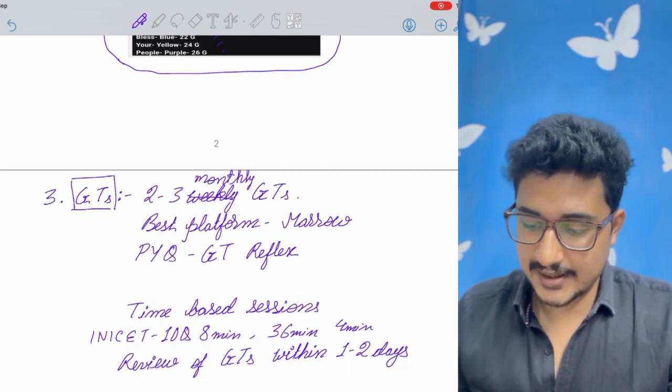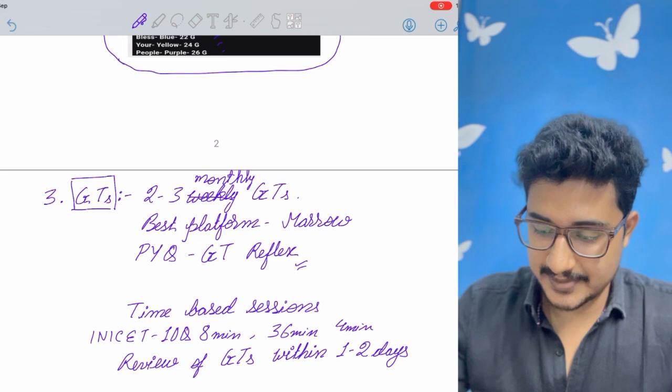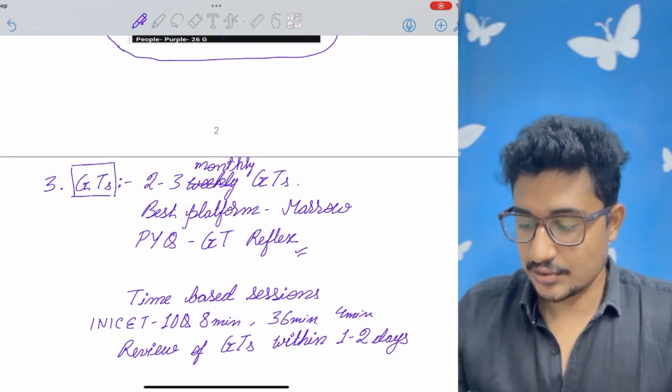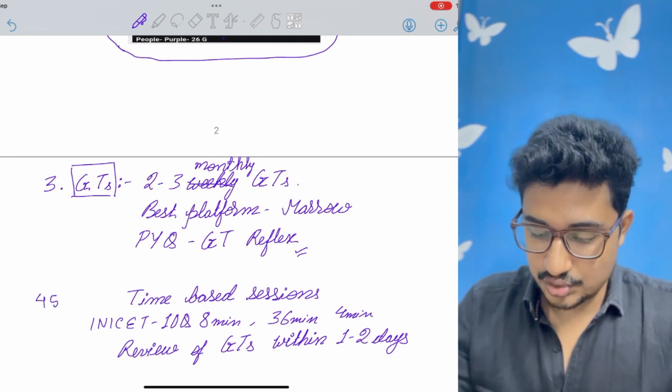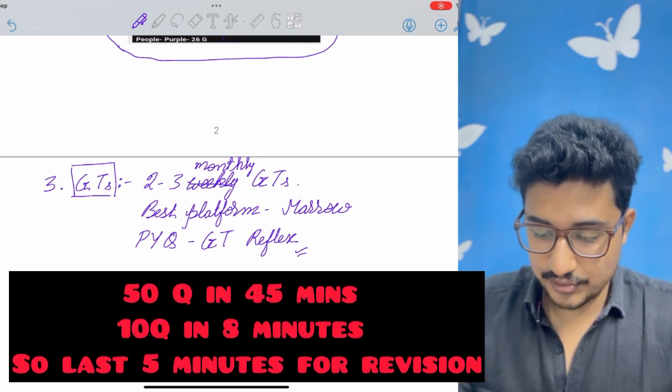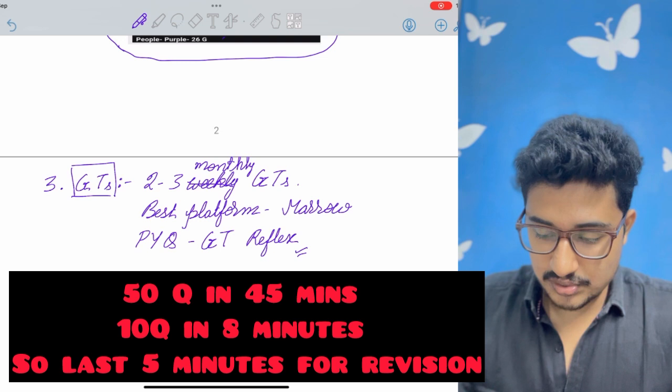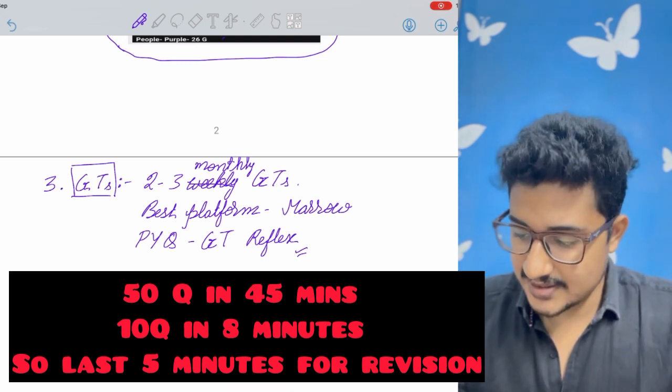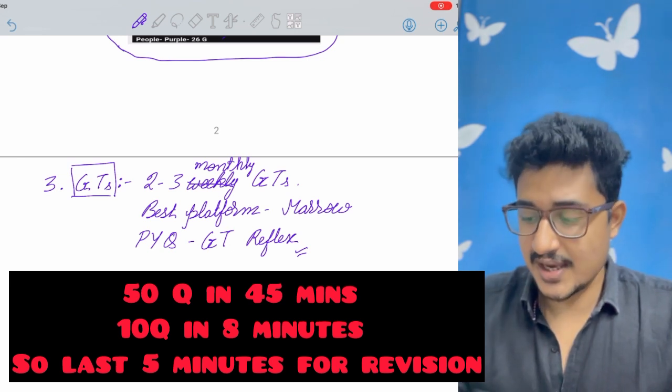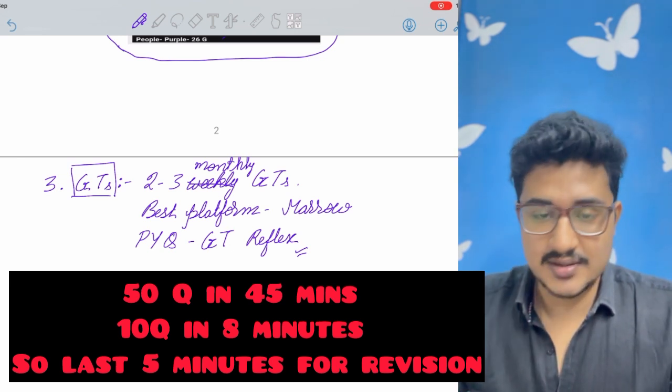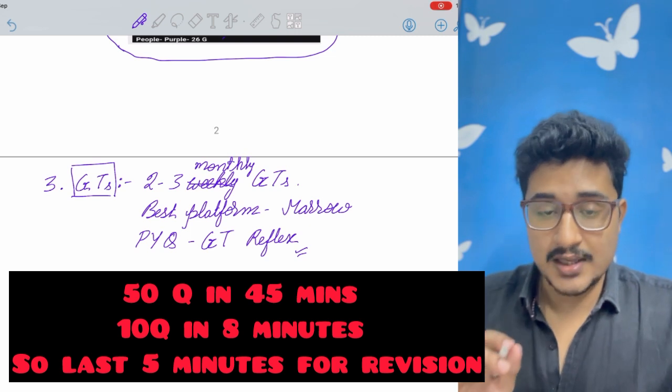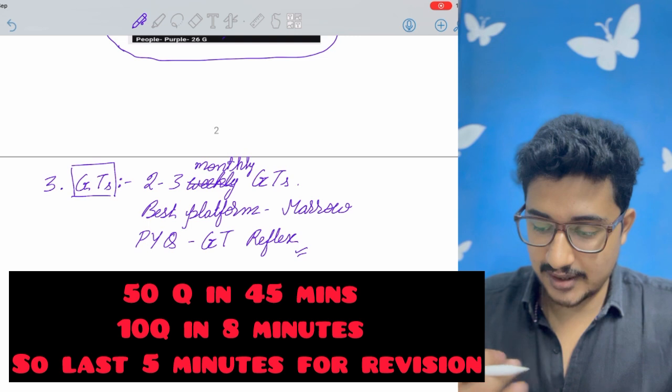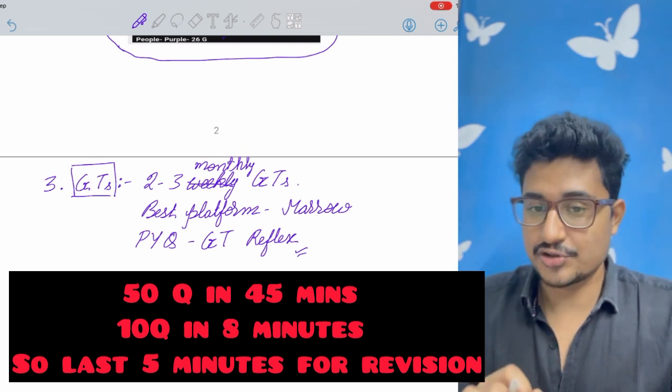If you want to do PYQ ka GT, you can do in the reflex app itself. And it is also based on time based sessions. As INICET is also a time based session exam. So it has 45 questions in 40 minutes. So if you solve 10 questions in 8 minutes also, then in 36 minutes, you will finish the 45 questions. And the rest 4 minutes, you should keep for the revision. The points you are stuck in. And again, revising that you have made correct or not.